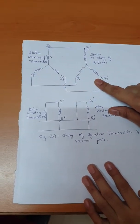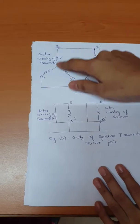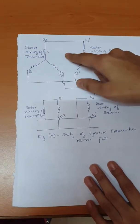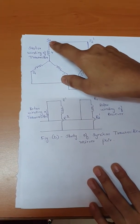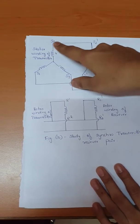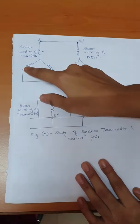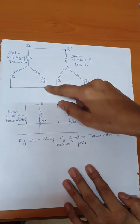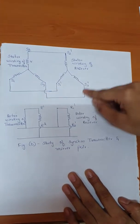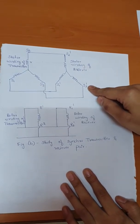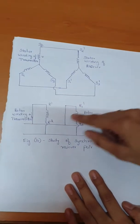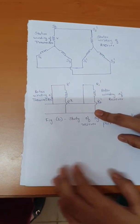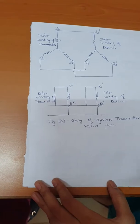This is the circuit diagram for the synchro transmitter and receiver pair. This is the stator winding for the transmitter and this is the stator winding for the receiver. Since we are doing a pairing of these two: S2 — the stator winding of the transmitter — has been connected to S2 dash of the receiver. Similarly, S1 of the transmitter is connected to S1 dash of the receiver. S3 of the transmitter is connected to S3 dash of the receiver. This is the rotor connection: R1, R2, R1 dash, R2 dash. Here we are going to give the AC signal. Now we will make the connection for the synchro transmitter and receiver pair.